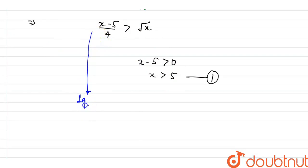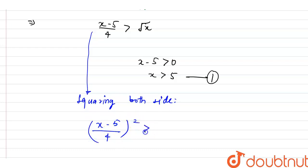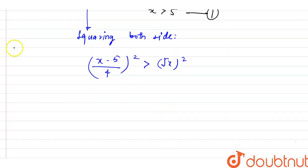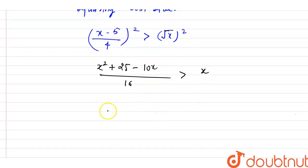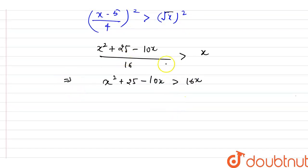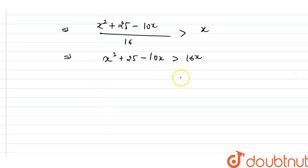Squaring both sides: (x minus 5) over 4, whole squared, is greater than root x squared, which gives x. Expanding using the (a minus b)² formula: x squared plus 25 minus 10x, all over 16, is greater than x. Multiplying both sides by 16: x squared plus 25 minus 10x is greater than 16x.